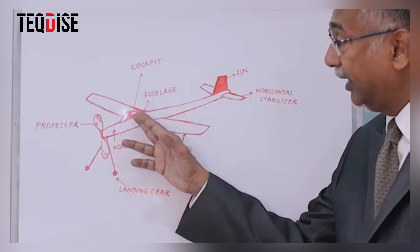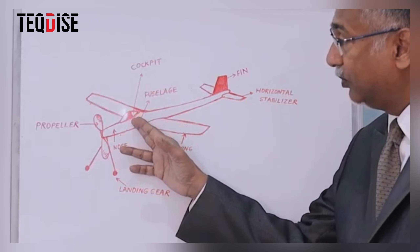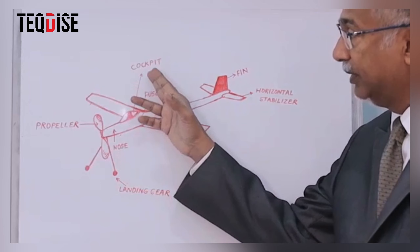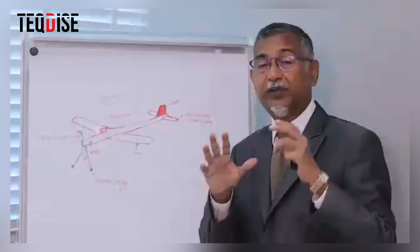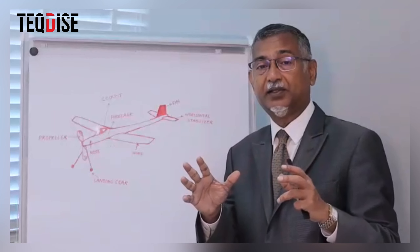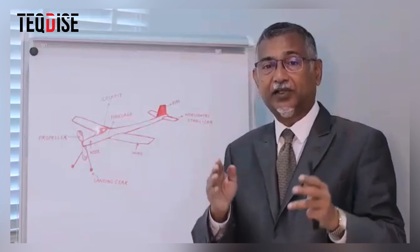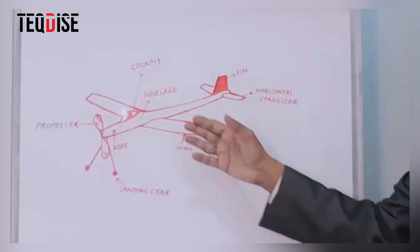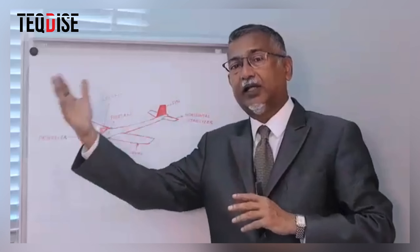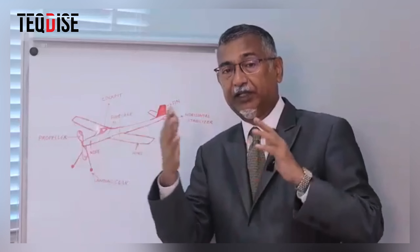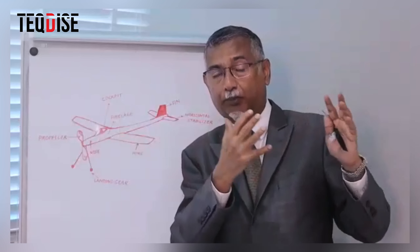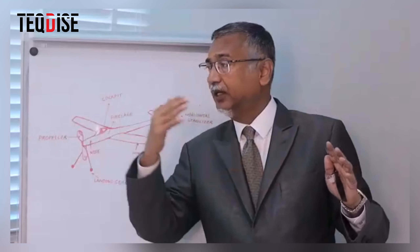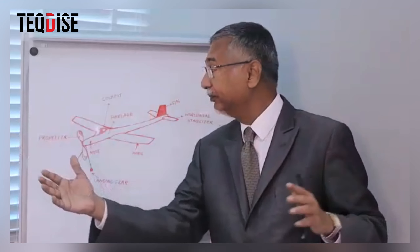The front of the fuselage is known as the nose — N-O-S-E. The fuselage also has a part of the aircraft called the cockpit; this is where the pilot sits and flies the aircraft. Then you have the two wings: the left side wing and the right side wing. The left wing is called the port wing — P-O-R-T — and the right wing is called starboard.